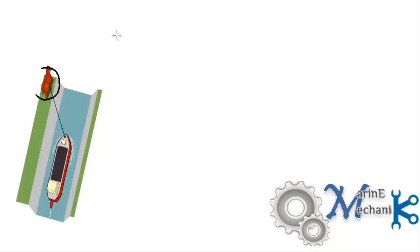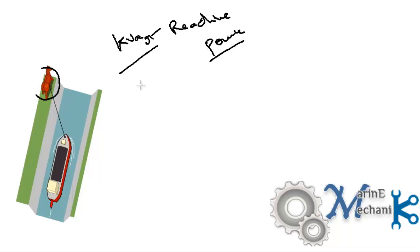Here is an example to understand the concept of KVAR or reactive power. Let's assume there is a horse on a canal going to pull a boat with the help of a rope through the canal. The boat is over here and the horse is on the bank of the canal.